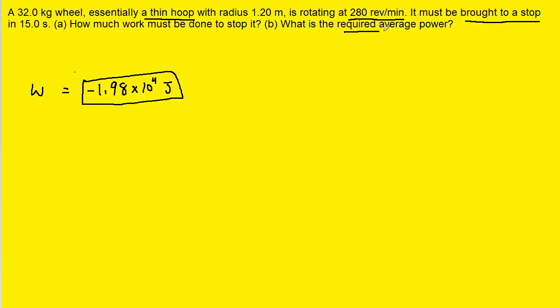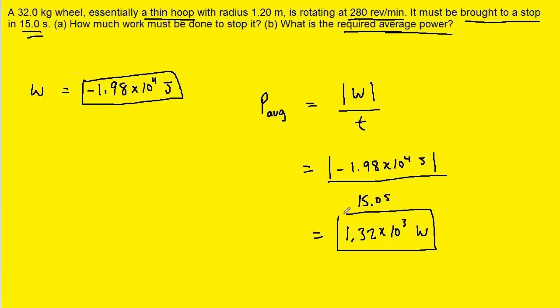And then on to part B, which asks us for the required average power. The average power can be computed by simply taking the magnitude of the work that was done on the thin hoop and dividing by the time interval. So we'll just take the absolute value of the work that we just calculated, and then we're going to divide by this time interval of 15 seconds. And we end up with about 1.32 times 10 to the power of 3. And the unit there would be joules per second, or if you prefer, you can change joules per second into watts. And so this is the correct answer to part B.